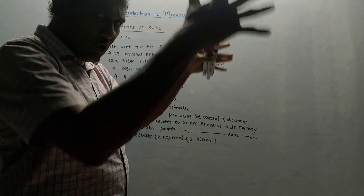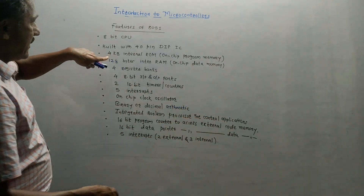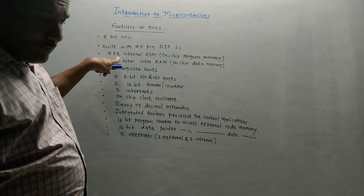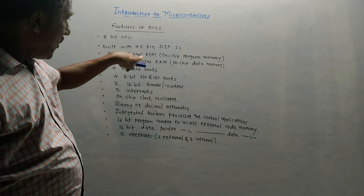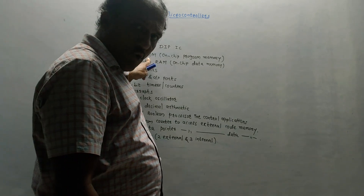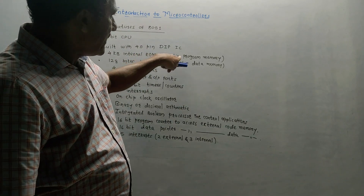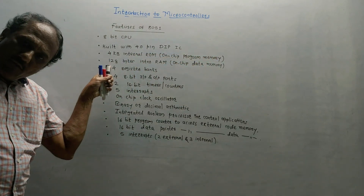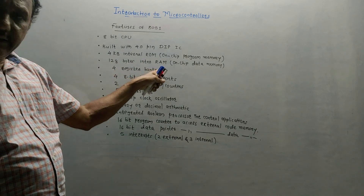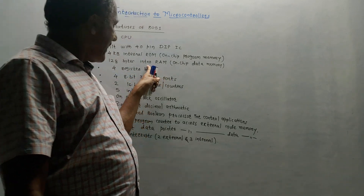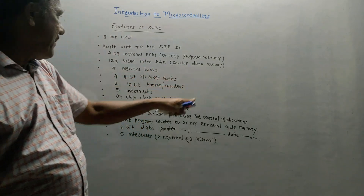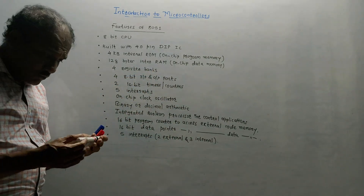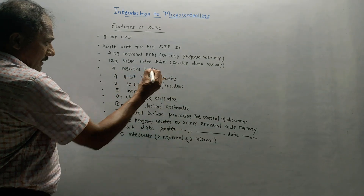We will discuss the pin configuration in detail later. It contains 4KB of internal ROM — read-only memory — which is on-chip program memory. Whereas, it has 128 bytes of internal RAM — random access memory — which is on-chip data memory. Then, there are 4 register banks, which are used to store the data.